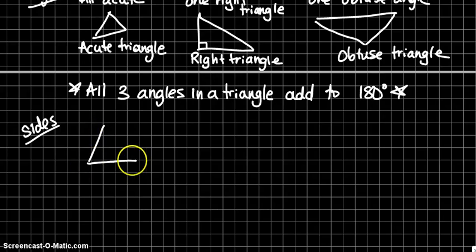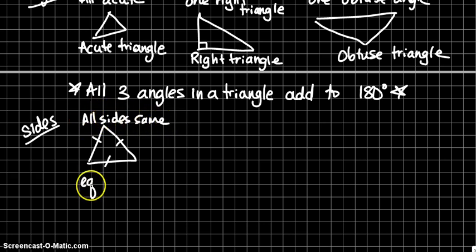So if you have a triangle where all sides are the same, the classification is equilateral.